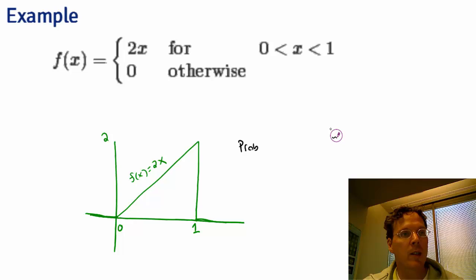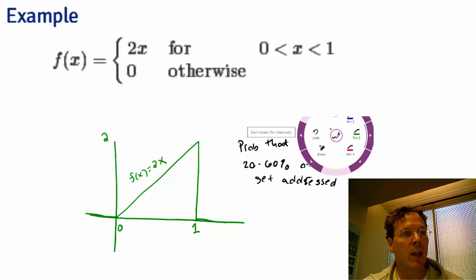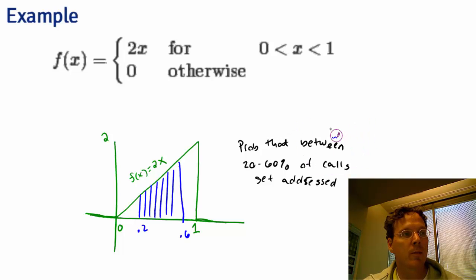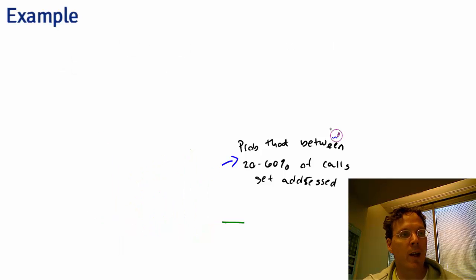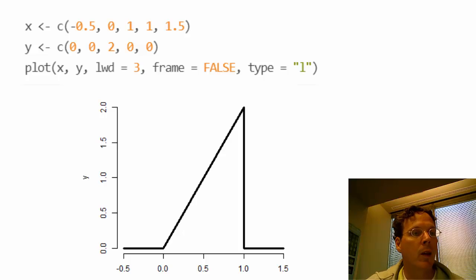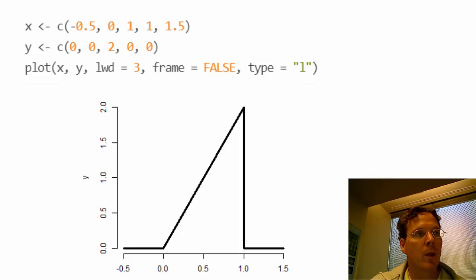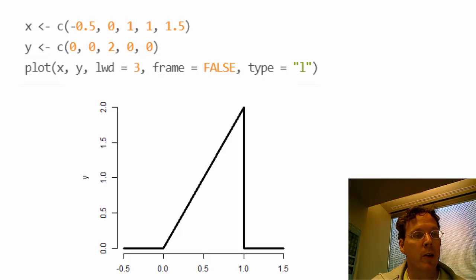This means the probability that between 20% and 60% of the calls get addressed that day is given by this area. Let's ask whether this is a mathematically valid density. I've plotted the probability density function here — it looks like a right triangle. The R code is given here and in the lecture slides, which are created using the Slidify format. You can use git to pull the course repository and look in the R Markdown file to get all of the code for all of the examples.